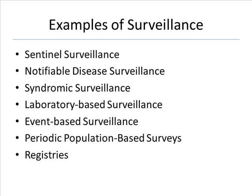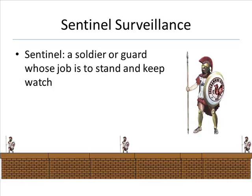Slide 22: We are going to identify some examples of surveillance: sentinel surveillance, notifiable disease surveillance, syndromic surveillance, laboratory-based surveillance, event-based surveillance, periodic population-based surveys, and registries.